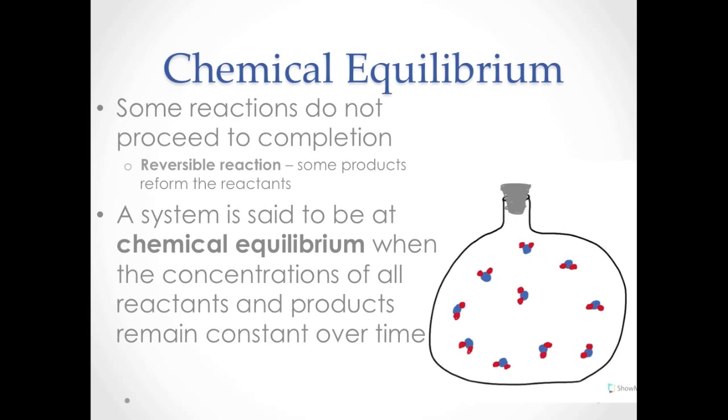Even a chemical system that appears to have gone to completion is just a system at an equilibrium that favors the formation of products much more than the formation of reactants. That is, a system for which the equilibrium position is said to lie far to the right.